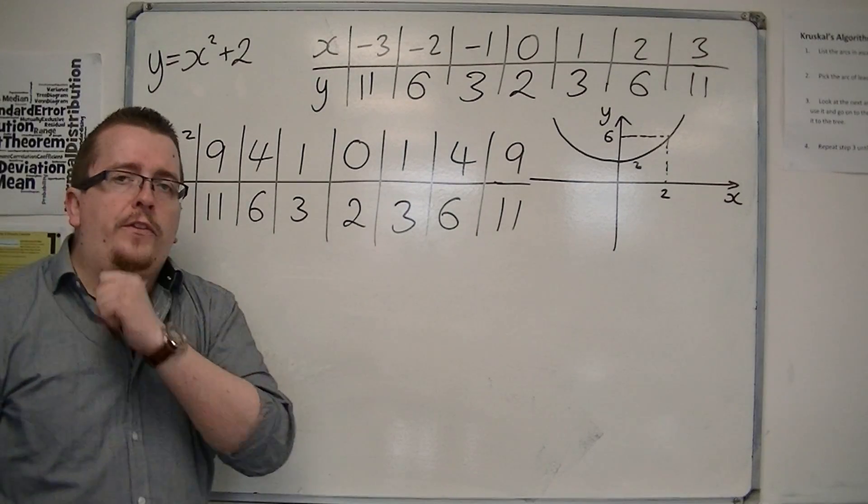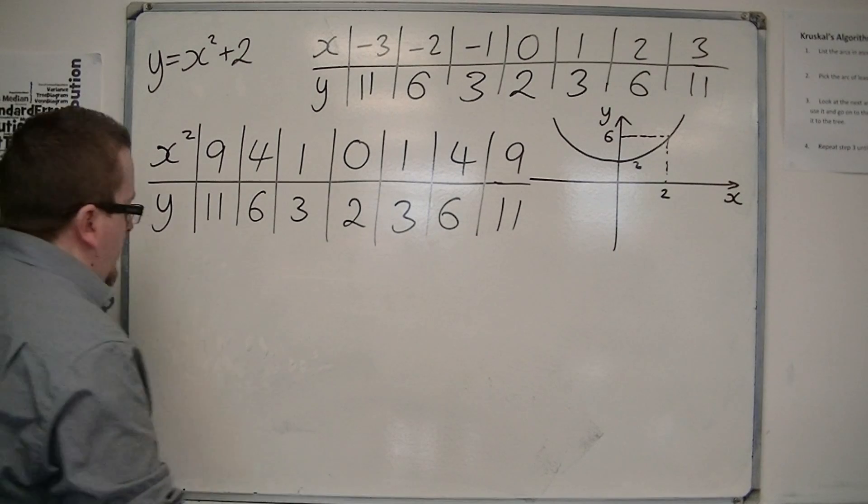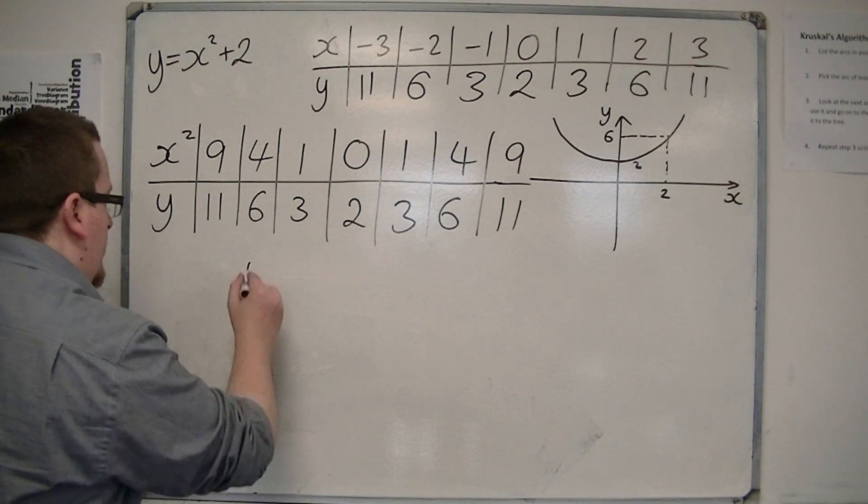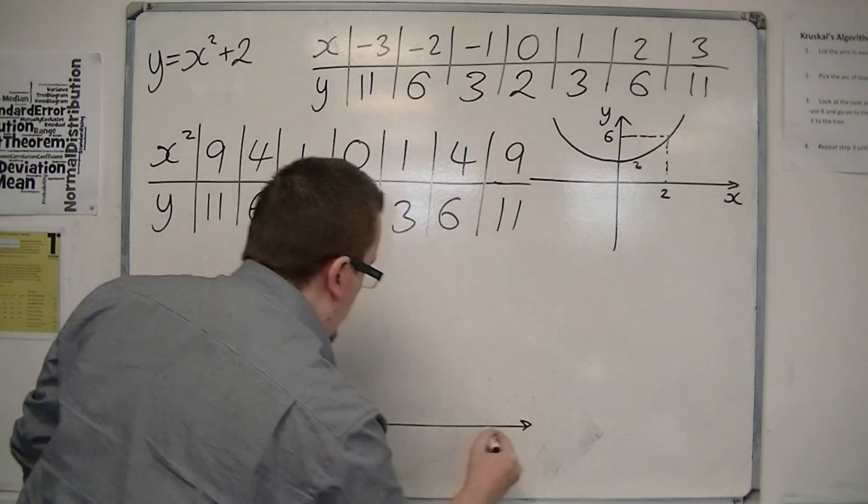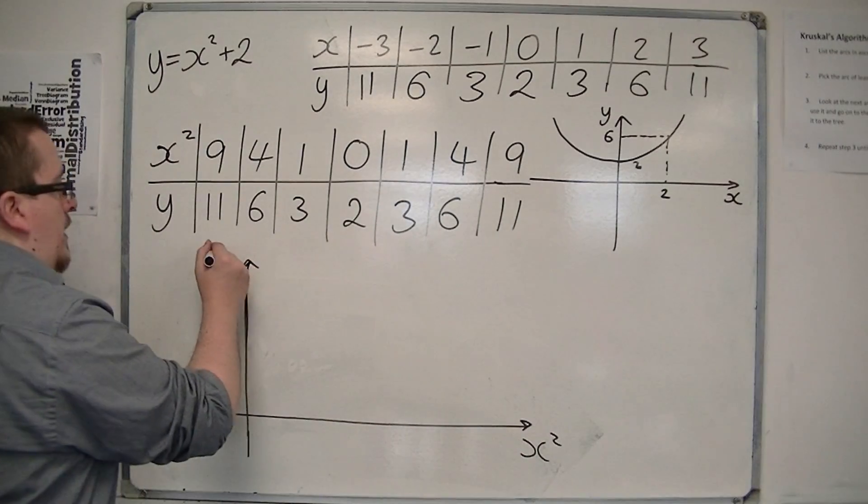So let's see what this would look like now if I plotted this. So instead of having x and y, I now have x squared and y.